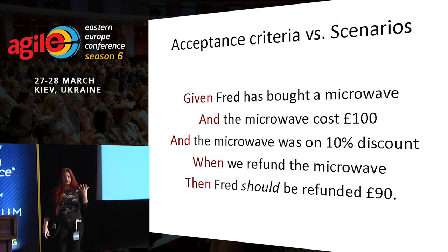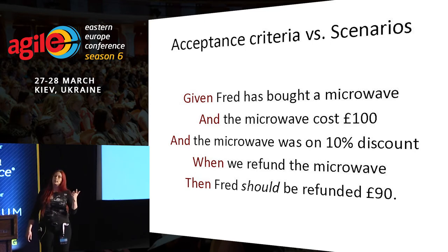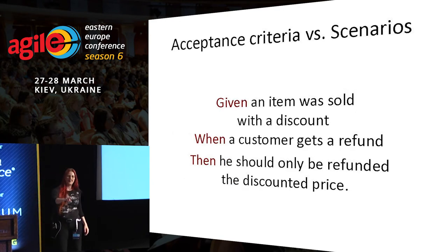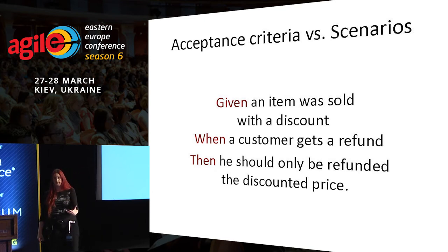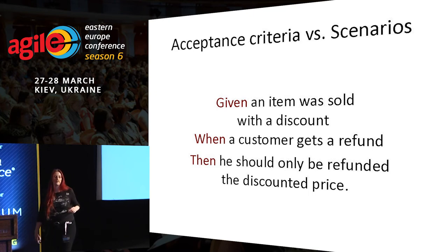There's one important distinction: the difference between a specific scenario and acceptance criteria. This is a specific scenario — specific customer, specific items, specific price. This, on the other hand, is acceptance criteria phrased in scenario form — it's true for all items. When a customer gets a refund, then he should only be refunded at the discounted price. If I see this, I'll ask: can you give me an example of an item? Can you give me an example of a customer? Can you give me an example of a discount? Until I get the specific scenarios out.